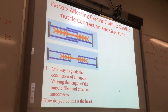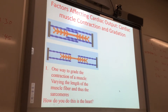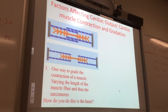How do you vary the length of the muscle fiber in the heart? You put more or less blood in the ventricles. Increasing volume in the ventricles stretches the cardiac muscle cells, which stretches the sarcomere. You're going to put more blood in the ventricles when you exercise.